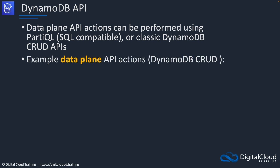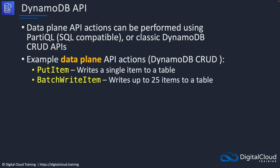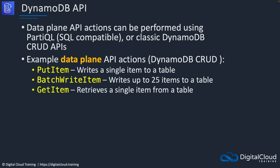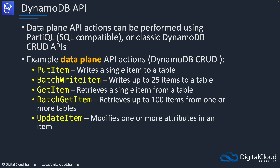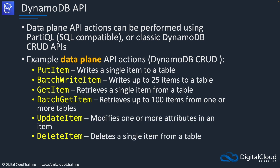Some example data plane API actions: PutItem writes a single item to a table, while BatchWriteItem writes up to 25 items to a table — which is more efficient. GetItem retrieves a single item from a table, and BatchGetItem retrieves up to 100 items from one or more tables. UpdateItem modifies one or more attributes in an item, and DeleteItem deletes an item from the table.